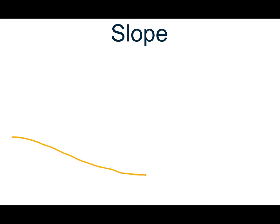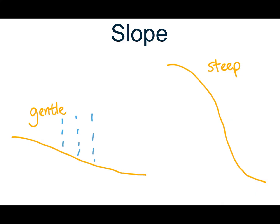So let's take a look at slopes. A slope can either be gentle or fairly steep, and whether a slope is gentle or steep is going to influence a number of things. If we have rainfall on a gentle slope, a lot of that water is going to soak into the ground and be available for plants and any animals that live in the soil, and just a little bit is going to run off. If we have a steep slope and it rains, the majority of the water is going to run down the steep slope, and very little water is actually able to infiltrate into the ground to be available for plants or soil animals.